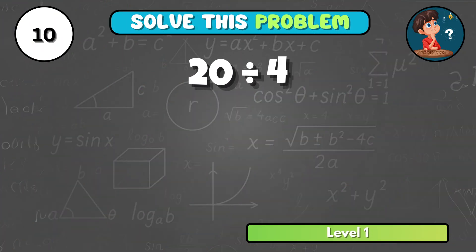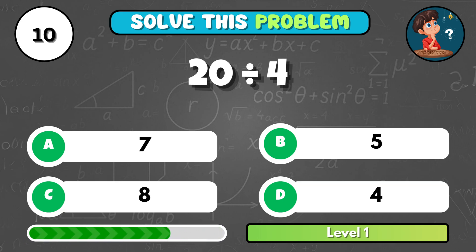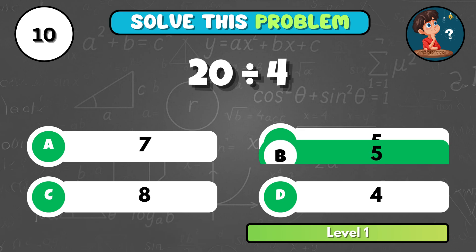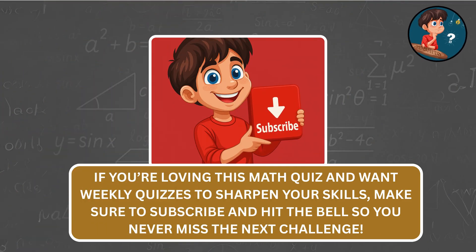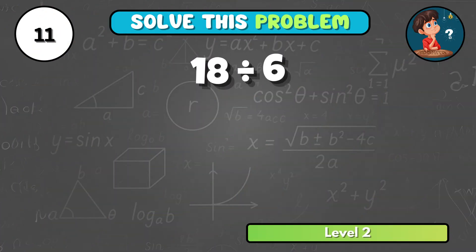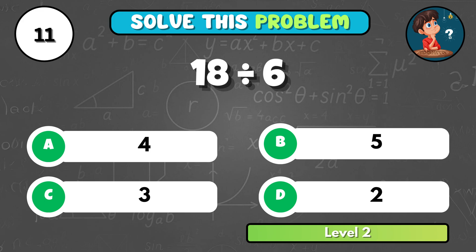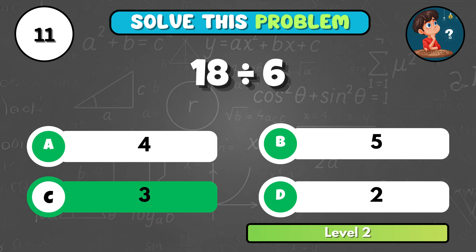Finally, for this set — what's twenty divided by four? It's B, five. If you're loving this math quiz, make sure to subscribe and hit the bell so you never miss the next challenge. Let's step it up. What is eighteen divided by six? That's C, three.